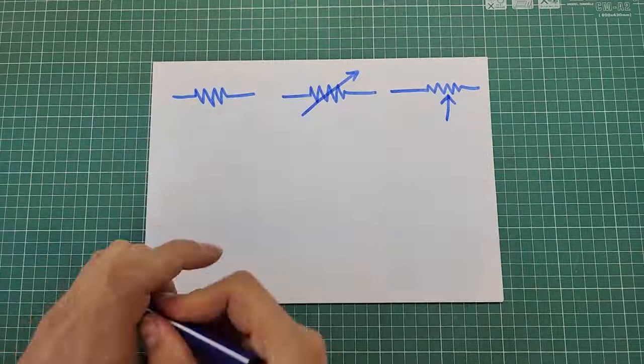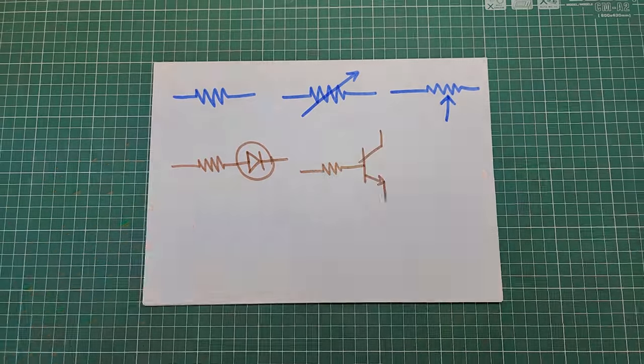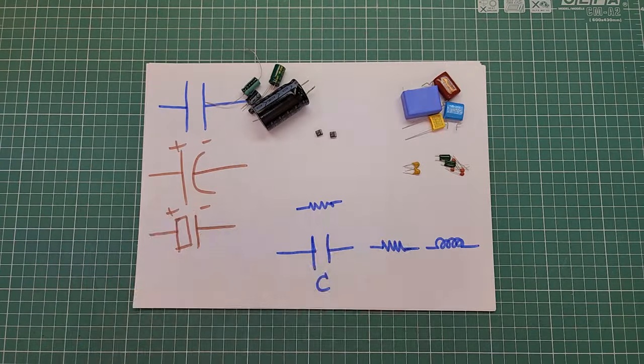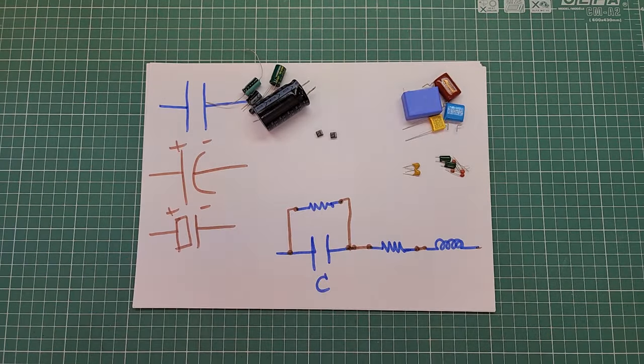Electronic circuits are made up of electronic components. The first step in learning electronic circuit design, circuit repair, and circuit analysis is to know the components and their functionality.